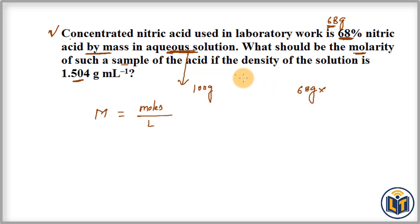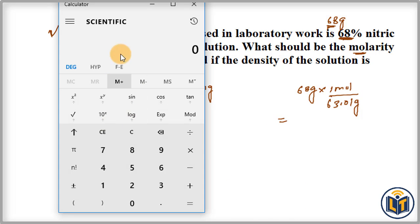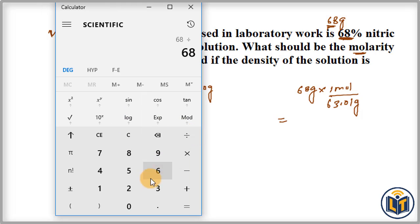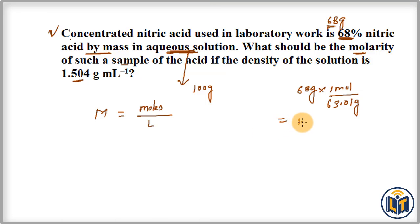We can do the calculation here. We have 68 divided by 63.01, and the value which we get is 1.079. It is 1.079 moles of nitric acid, HNO3.